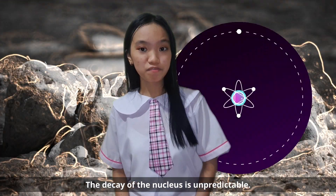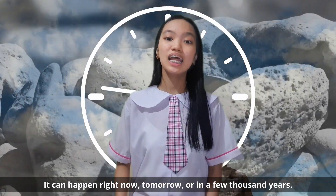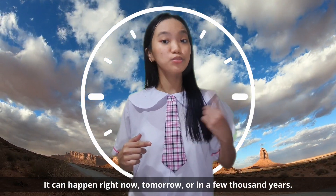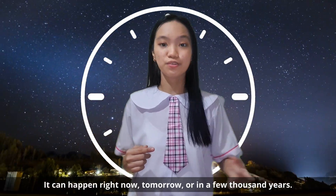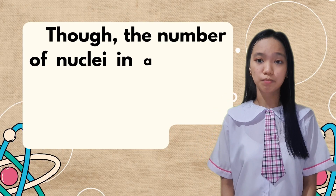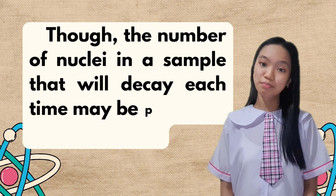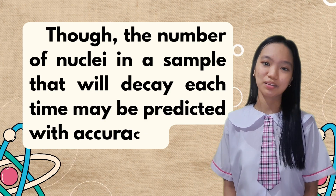The decay of the nucleus is unpredictable — it can happen right now, tomorrow, or in a few thousand years. Though the number of nuclei in a sample that will decay each time may be predicted with accuracy.